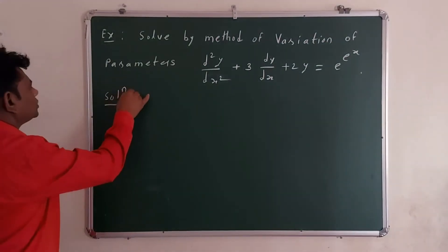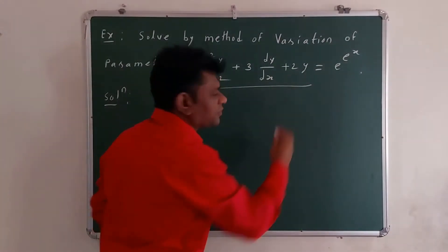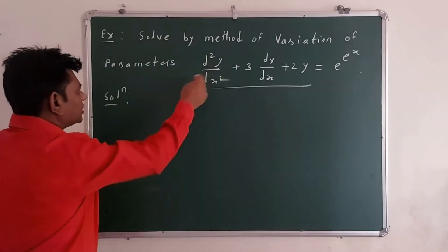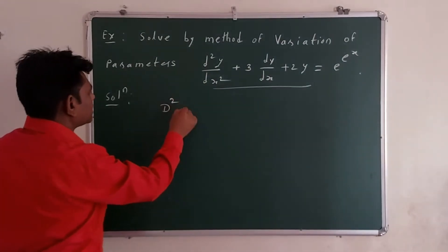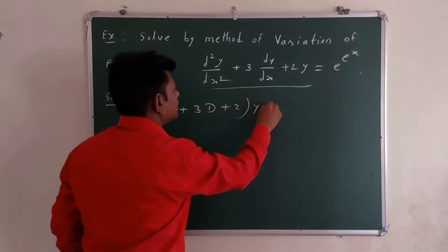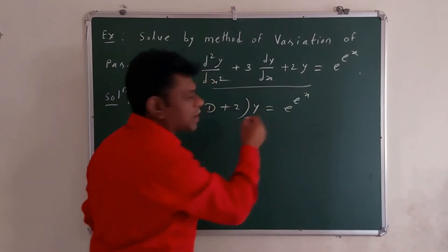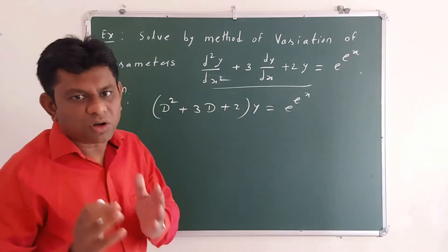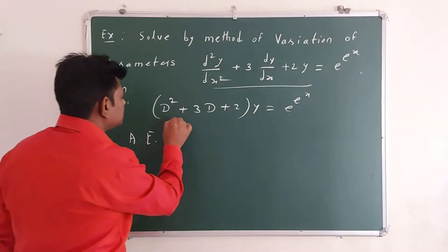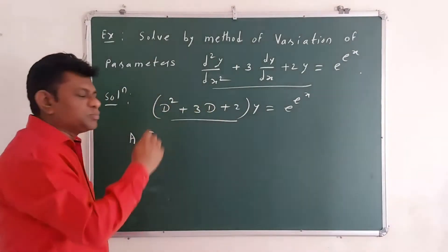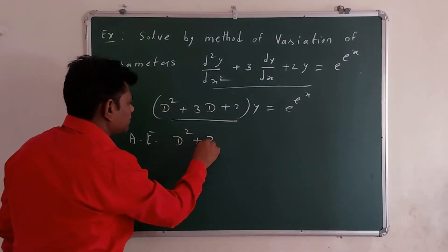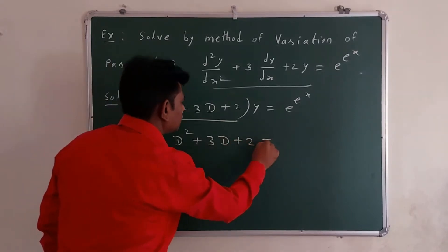Now for the solution, we first write this differential equation in symbolic operator form: (D² + 3D + 2)y = e^(e^x). Now we write the auxiliary equation by equating the operator bracket to zero, giving D² + 3D + 2 = 0.